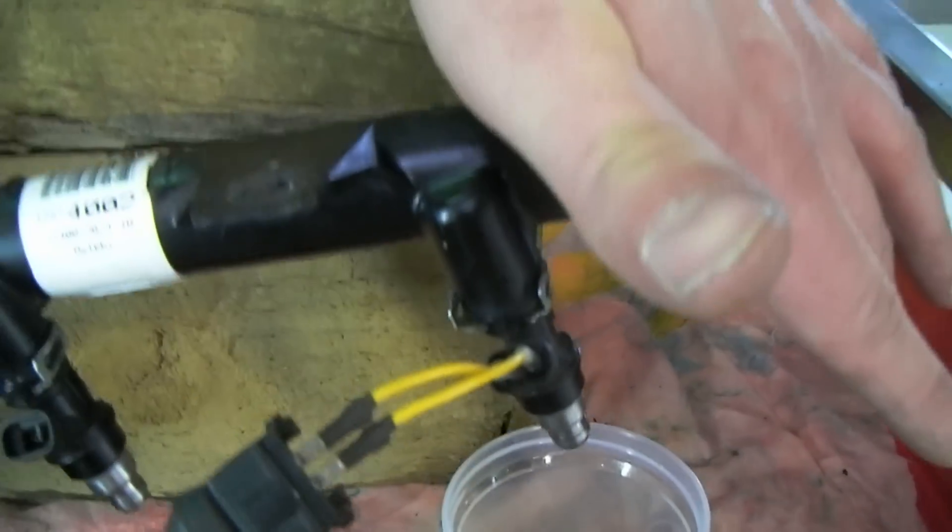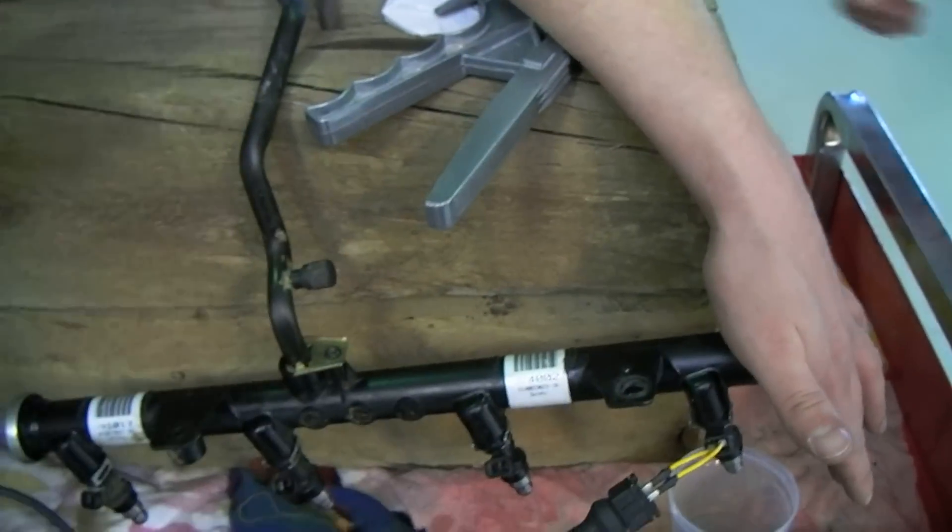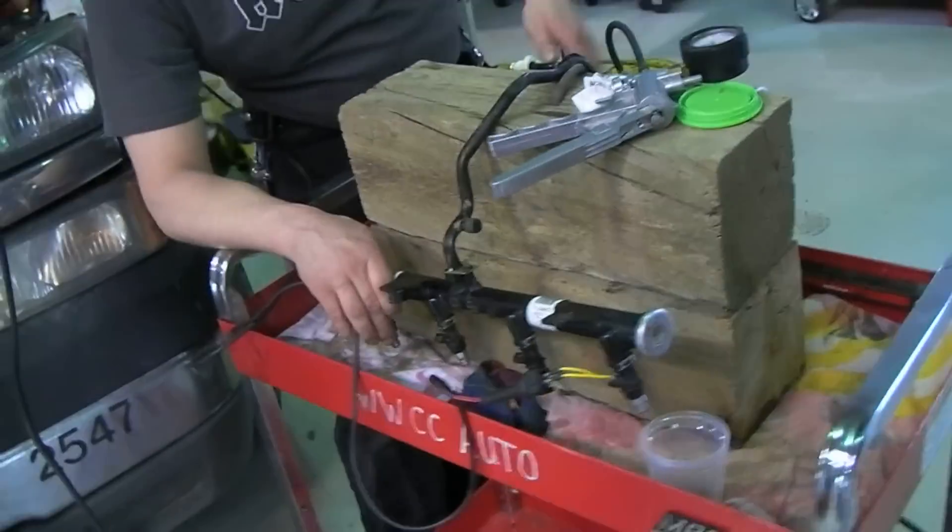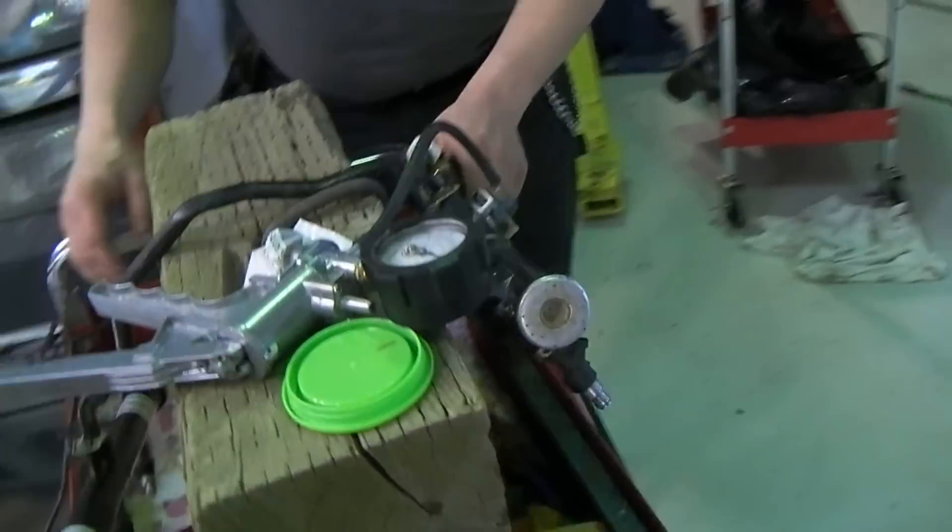Could have been an air pocket because we've got... This is not a returnless system, it's a return type system. But the return is all on the other rail over here.